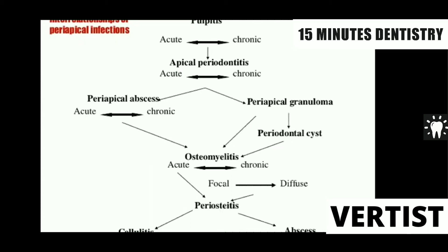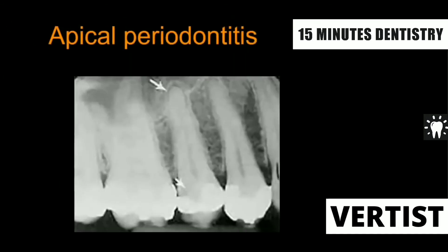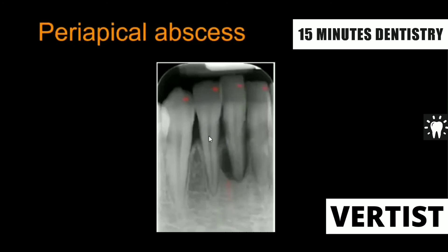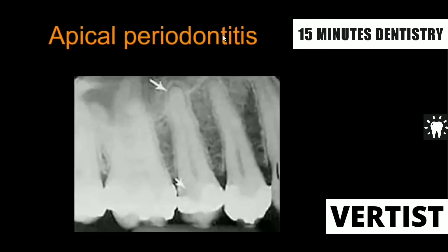The common topics asked in the viva are the abscess, granuloma, and cystic lesion. As shown by the arrow, you can see a restoration in the premolar region — that restoration is quite deep, so the infection has reached from the coronal pulp to the radicular pulp and then to the periapical tissues. When it reaches the periapical tissues, you see widening of the periodontal ligament space — this is called apical periodontitis or acute periapical abscess.